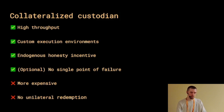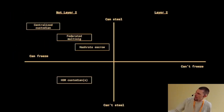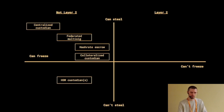Collateralized custodians are right on the edge of almost getting to layer two, but technically they can still freeze or steal user funds.